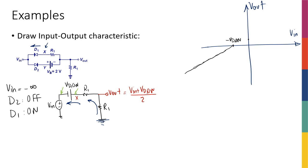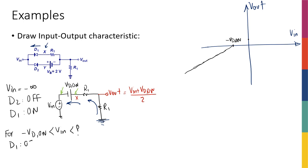After that, D1 turns off. For V_in greater than -V_D_on (up to some unknown upper limit), both D1 and D2 are off. The circuit is completely detached: V_in has no connection to V_out, and V_out is just connected to ground through R1 with no current flowing, so there's no voltage drop across R1. Therefore V_out equals zero.